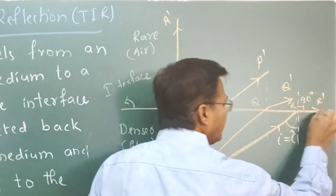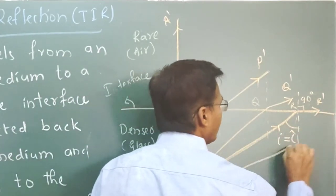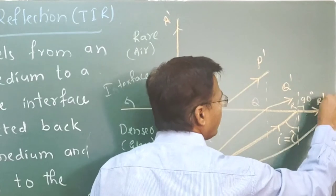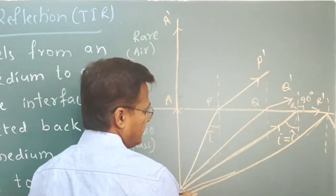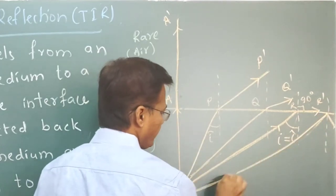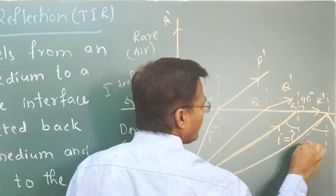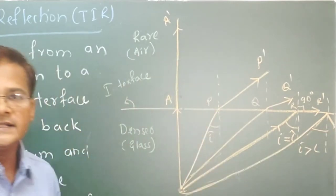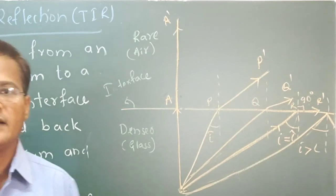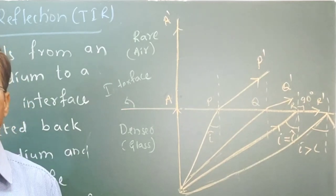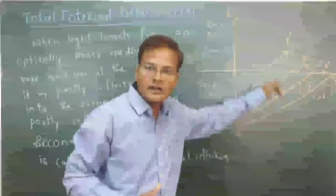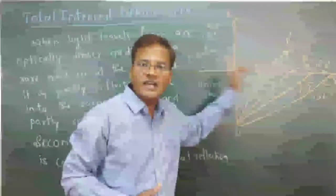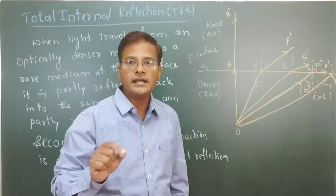If I increase the angle of incidence further, the ray will get reflected back. So then it will be get reflected. This reflection is called total internal reflection. This is when I is greater than critical angle — when the angle of incidence is greater than the critical angle, the ray is sent back to the same denser medium. That phenomenon is known as total internal reflection.